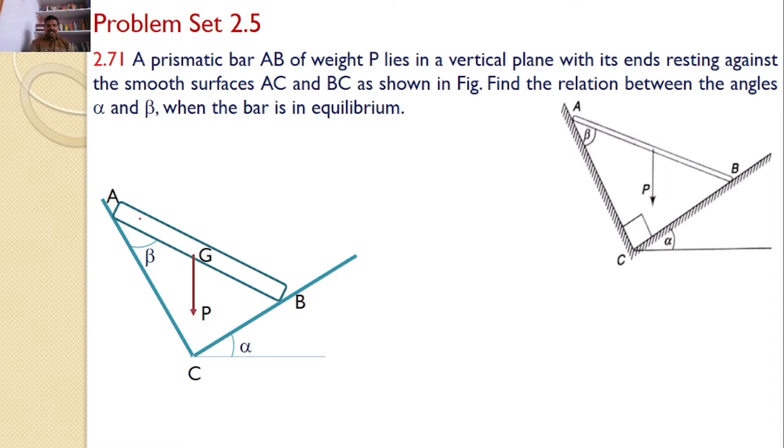Now the various forces acting on the bar AB are the self-weight P, which you can clearly see here, and there is a reaction by the surface BC onto this bar which is perpendicular to the surface BC, and there is another reaction by the surface AC onto the bar which is perpendicular to the surface.